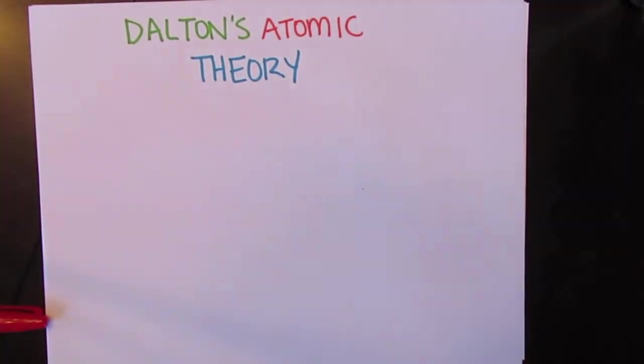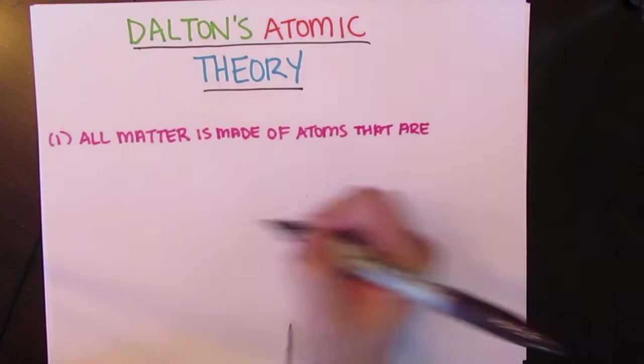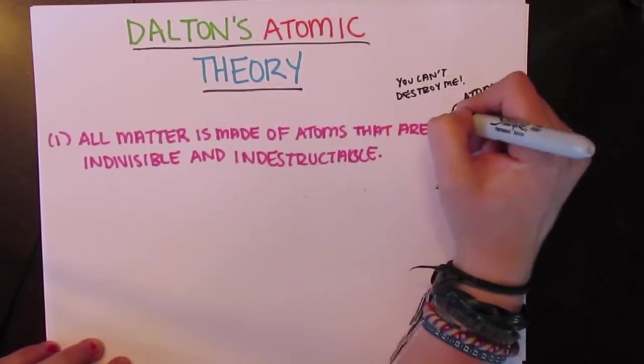Dalton's atomic theory consists of four main accepted components. The first is that all matter is made up of atoms that are indivisible and indestructible.